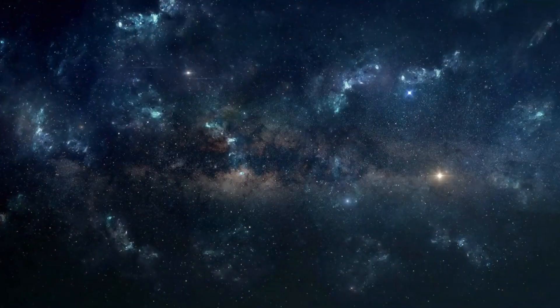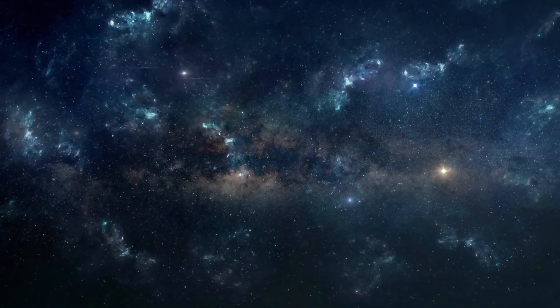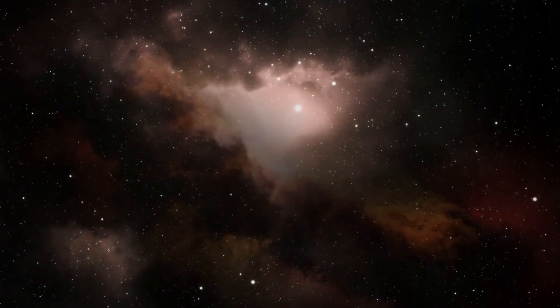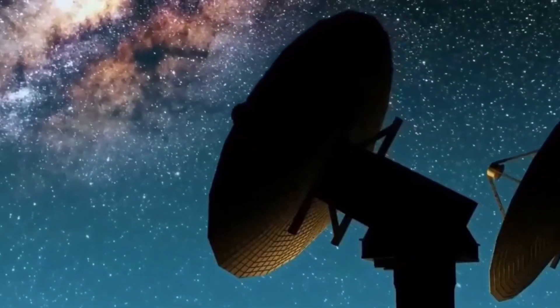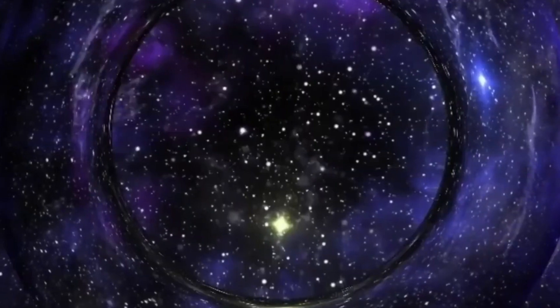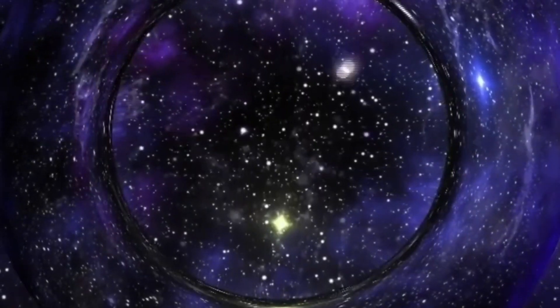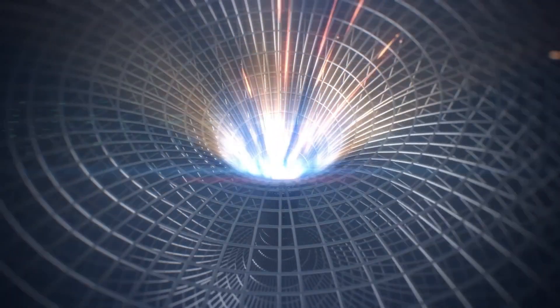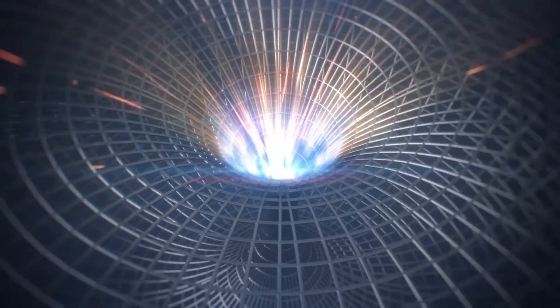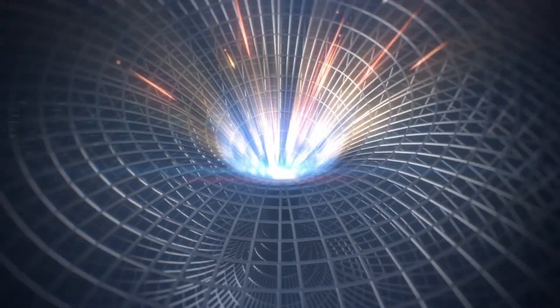Called Kerr black holes, these spinning celestial monsters don't have real singularities, and matter doesn't necessarily end up falling inside their central singularities. Instead, past the event horizon, the centrifugal force creates an almost normal space-time just around ring singularities, where objects can move in different directions, and they might be able to do so for a very long time.